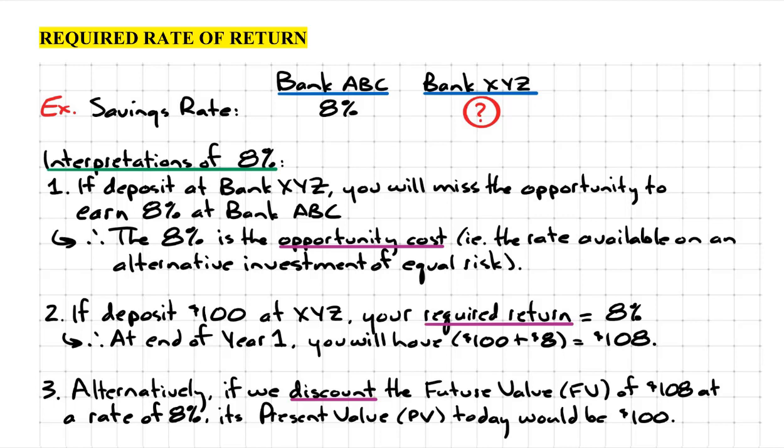Required rate of return. Let's have a look at an example. Suppose that we have two banks, ABC and XYZ, and currently ABC is offering 8% on their savings account.